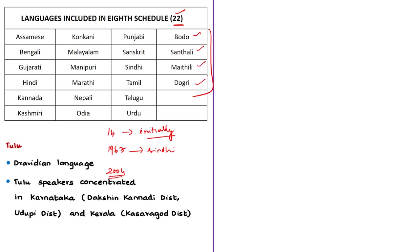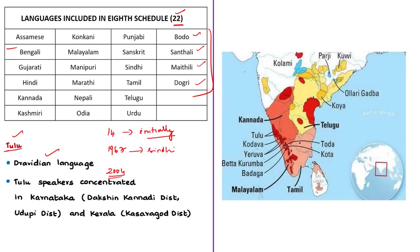As per the Ministry of Home Affairs, there are demands for inclusion of about 38 languages in the Eighth Schedule, and one such language is Tulu. Tulu is a Dravidian language, concentrated in two coastal districts of Karnataka — Dakshina Kannada and Udupi districts — and also in the northern portion of Kasaragod district of Kerala. In this editorial, the author has mentioned the need to include Tulu and other deserving languages in the Eighth Schedule.